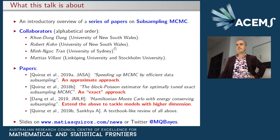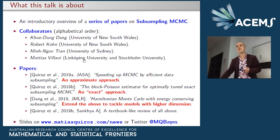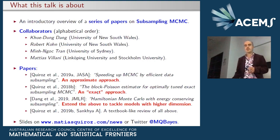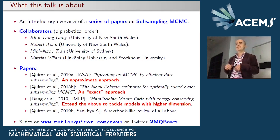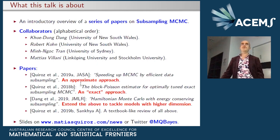Most people here are from UNSW and affiliated with ASAMS. I will present three papers today. The first one was published in JASA — it's an approximate approach in the sense that the algorithm we developed generates samples from an approximate posterior. The second is the block Poisson estimator paper, which is an exact approach — I'll explain what I mean by exact. The third paper, recently accepted to the Journal of Machine Learning Research, extends both approaches to tackle models with more parameters.